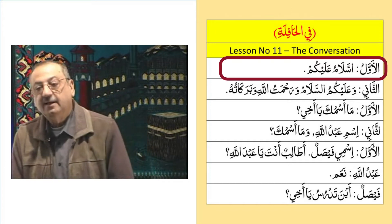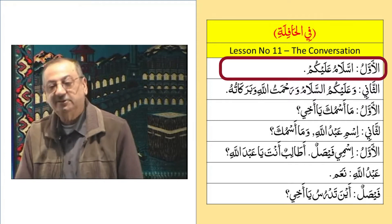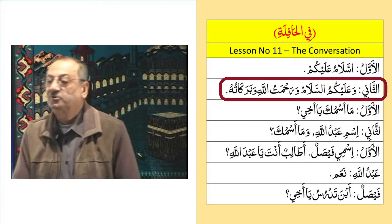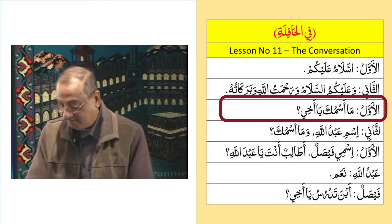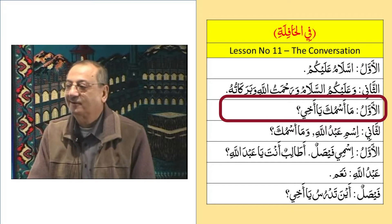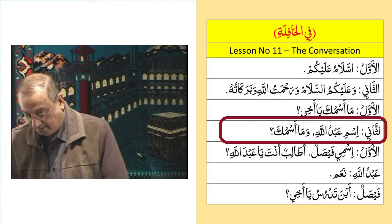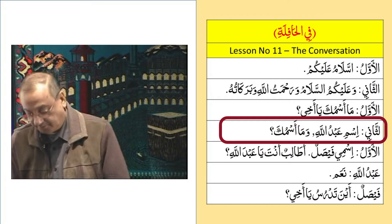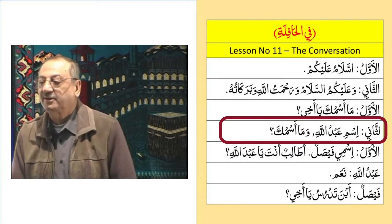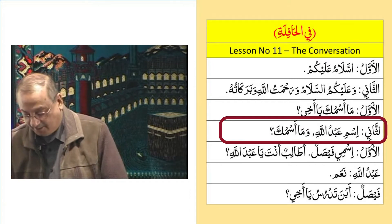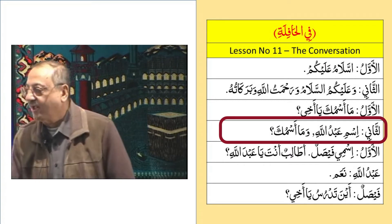The first person starts the conversation with 'As-Salaamu Alaikum.' The second person replies: 'Wa Alaikum As-Salaam Wa Rahmatullahi Wa Barakatuhu.' Then the first person asks, 'Masmuka ya akhi?' — meaning 'What is your name, oh brother?' The second person answers, 'Ismi Abdullah.' So person two is Abdullah, and person one is Faisal. Besides Al-Awwalu, write Faisal; besides Thani, write Abdullah.